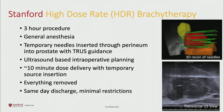At Stanford our HDR brachytherapy procedure is given under general anesthesia and is about three hours in duration. We place needles into the prostate through the perineal skin — the skin between the scrotum and anus — under ultrasound guidance, similar to a biopsy. The treatment itself only takes about 10 minutes as the radioactive source moves in and out of each needle. Once completed, everything is removed from your body. Patients go home the same day and you're not radioactive afterward.